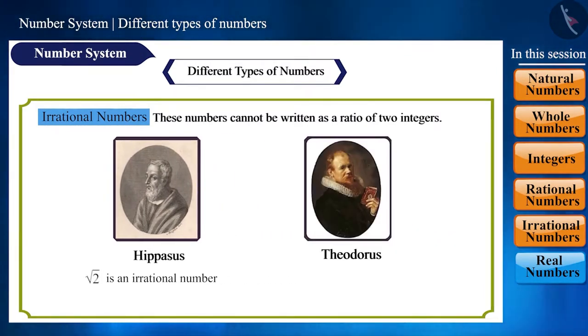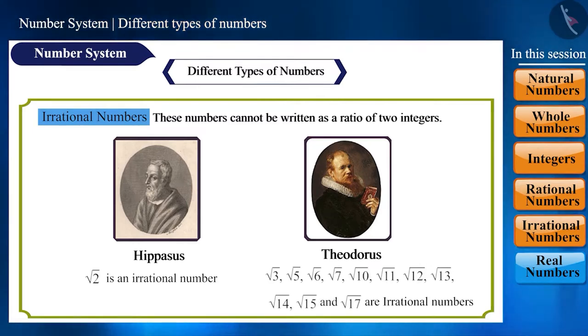After this, Theodorus of Cyrene proved that root 3, 5, 6, 7, 10, 11, 12, 13, 14, 15, and 17 all are irrational numbers.